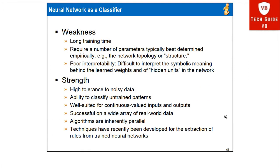For a neural network as a classifier, there are weaknesses and strengths. The weaknesses are: first, it takes long training time; second, it requires a number of parameters typically best determined empirically, such as the neural network topology or structure; third, poor interpretability — it is difficult to interpret the symbolic meaning behind the learned weights and hidden units in the network.